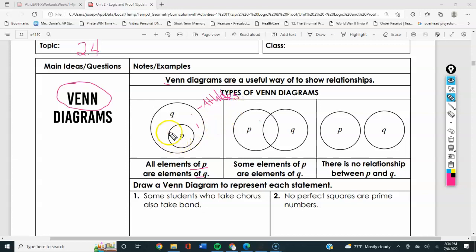A good example: we could call this outside one athletes, and in here we could put basketball players. Because all basketball players are athletes, every single one of the members in this P is also a Q. There's no one who plays basketball who is not an athlete because by definition if you play basketball you are an athlete.